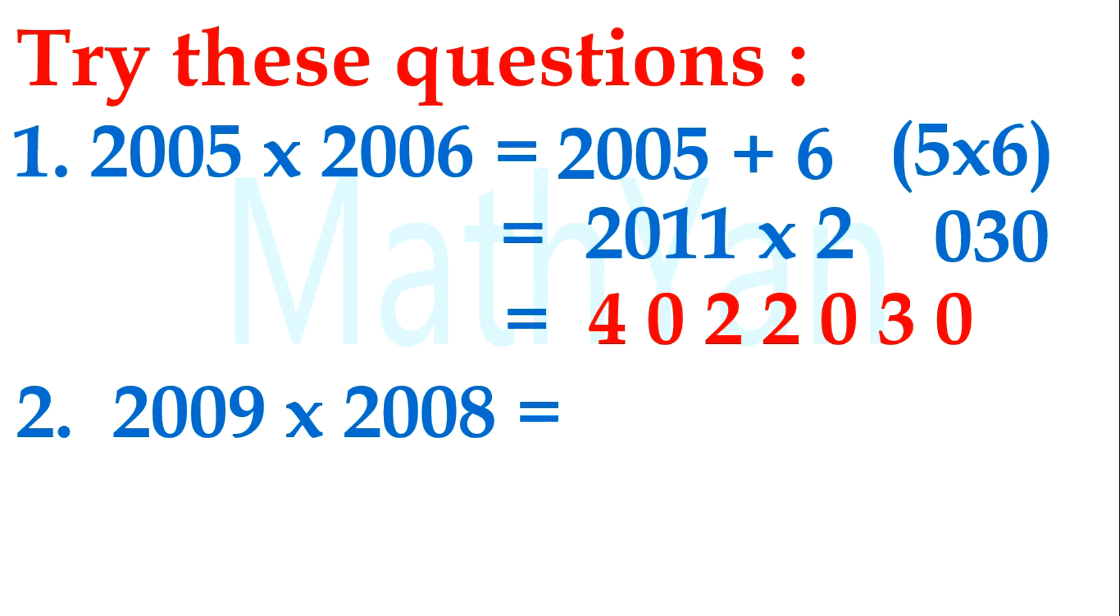How about this? Remember, 2009 plus 8 is 2017. Times 2, then the number behind is 72, 2072. So 2017 times 2 is 4034072.